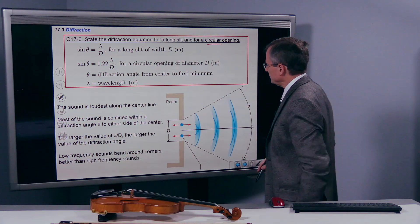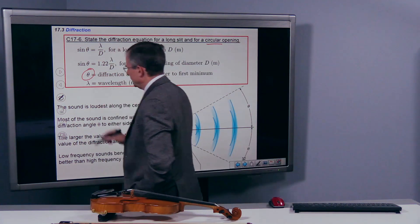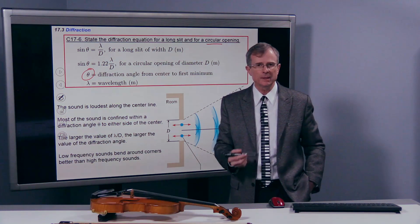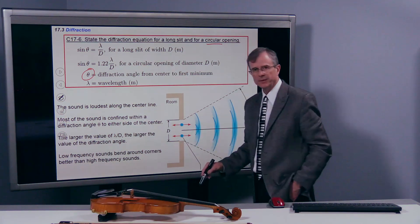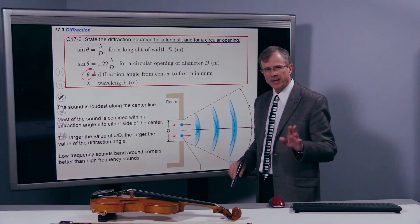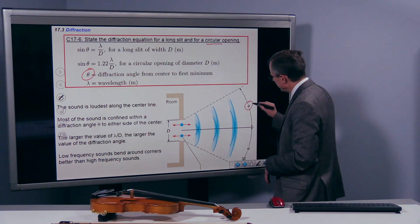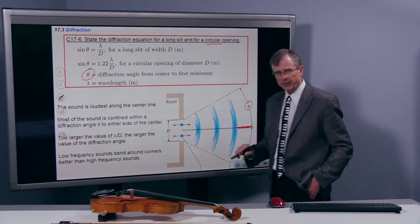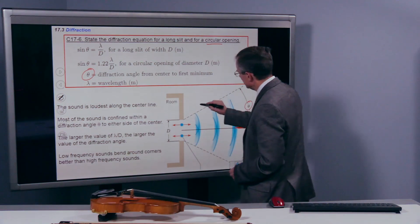The answer is that there is a diffraction angle, and this is the key to understanding diffraction: this angle. What does it really mean? So here's either a slit of width d or a circular opening of diameter d. This angle θ is the angle between the center line, this line right directly in line with the opening, and the first diffraction minimum.